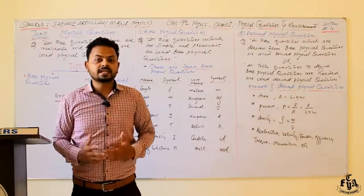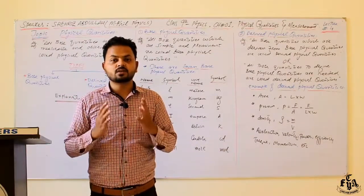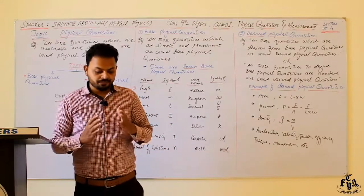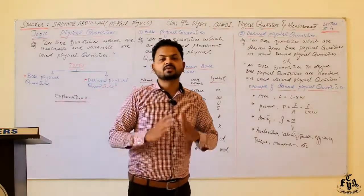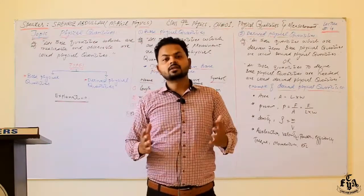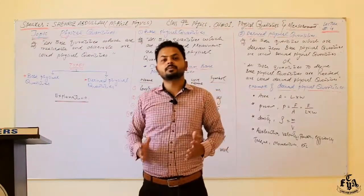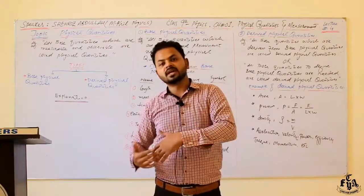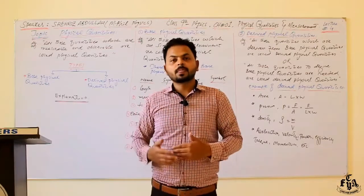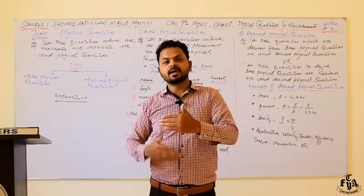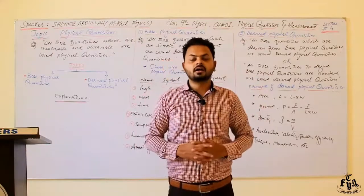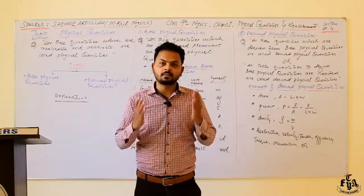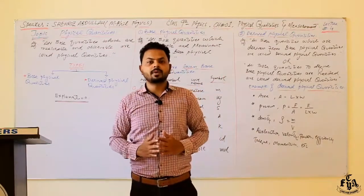Physical quantities are all those quantities which are measurable and observable. All those quantities which are measurable and observable are called physical quantities. We can measure them and also observe them using our five senses.